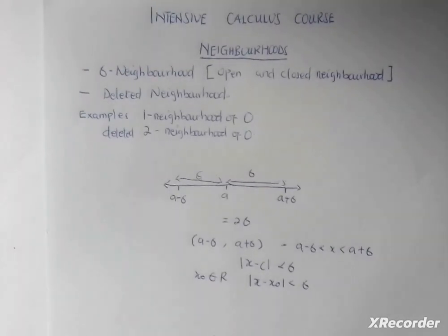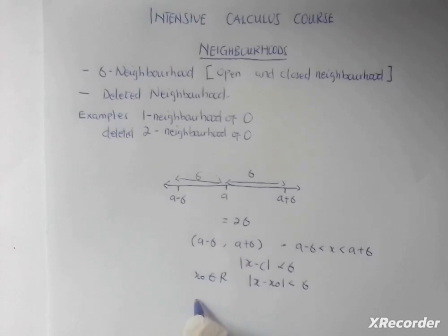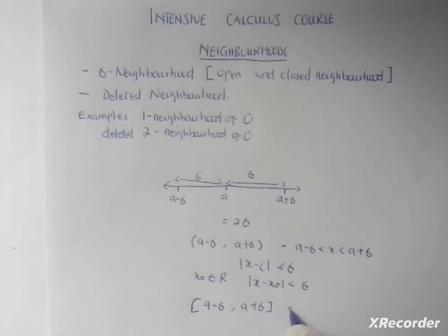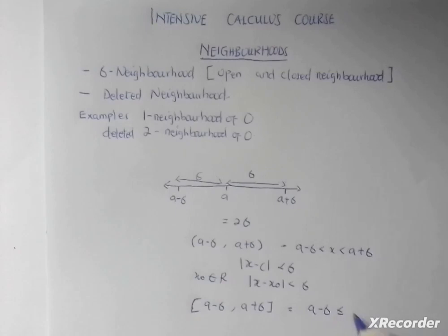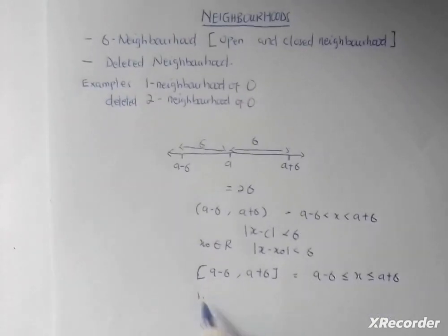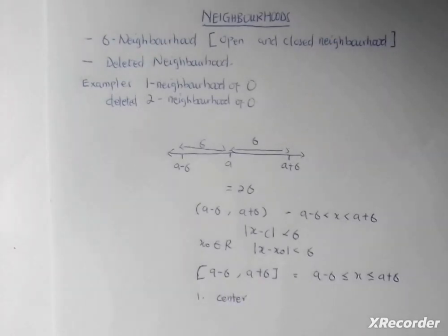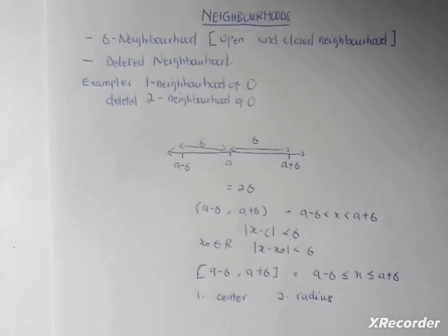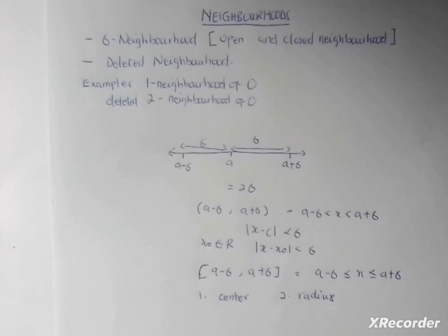For the closed neighborhood, I'm going to have the closed bracket [a minus delta, a plus delta], and this is also equal to a minus delta less than or equal to x less than or equal to a plus delta. So these are the open and the closed neighborhoods of a. In neighborhoods there are some things to take note of: one, we need a center — the particular number we want to find the neighborhood around; and two, we need the radius — how far we want to go away from this center, how far we want to create boundaries around it.